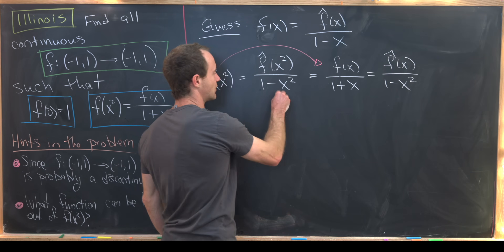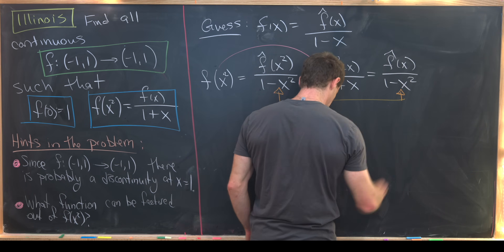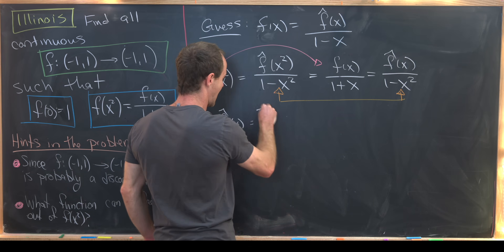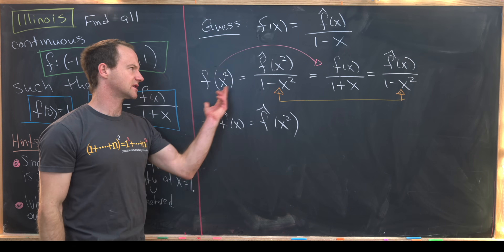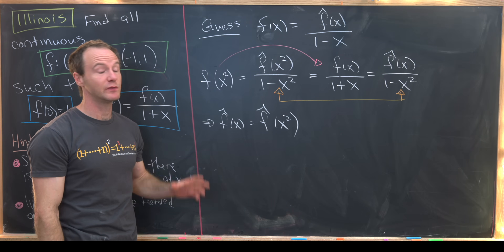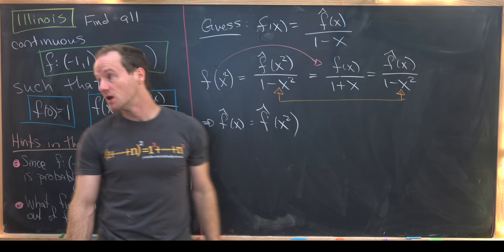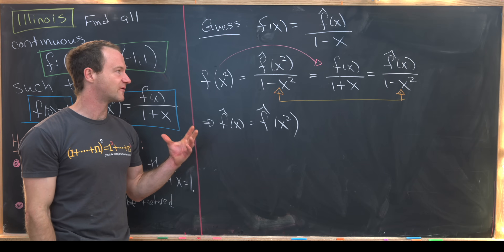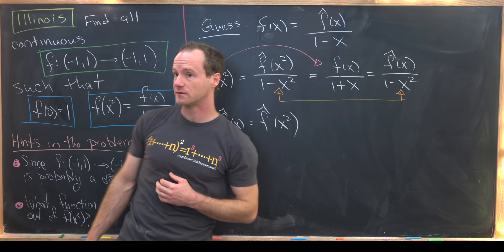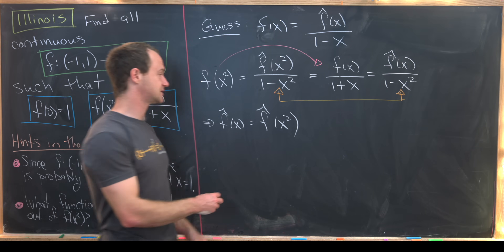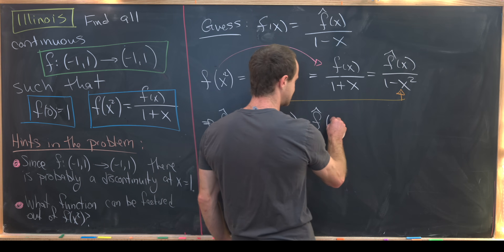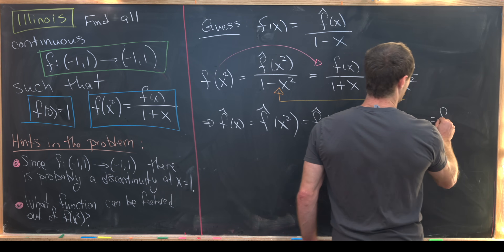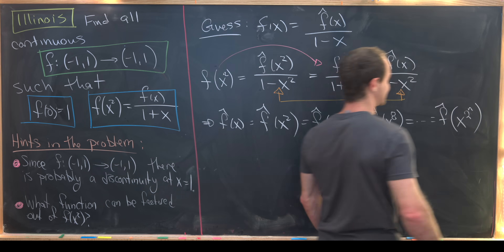Taking these two parts, we can cancel the (1 - x²) from the denominator — it's never zero because of our domain restriction — and conclude that f̂(x) = f̂(x²). Since this holds for every x in the interval, we can keep applying it: f̂(x) = f̂(x²) = f̂(x⁴) = f̂(x⁸) = ... = f̂(x^(2^n)).